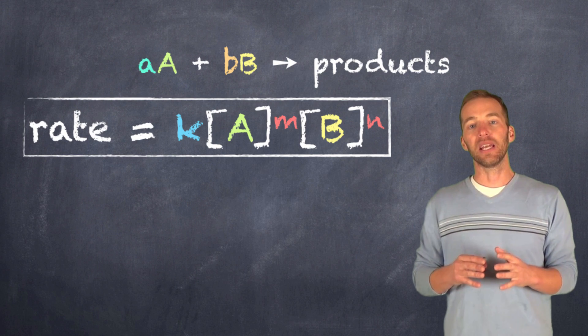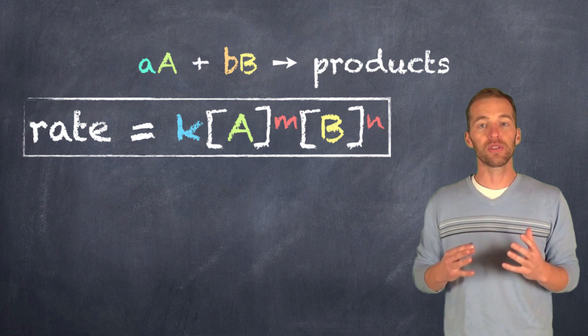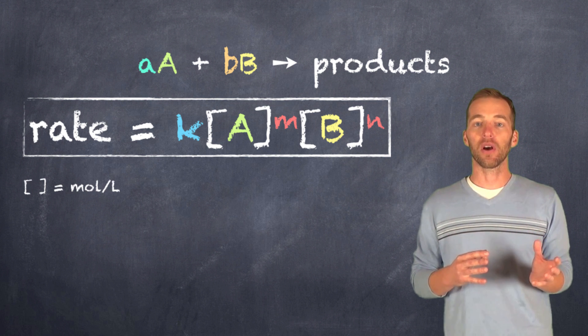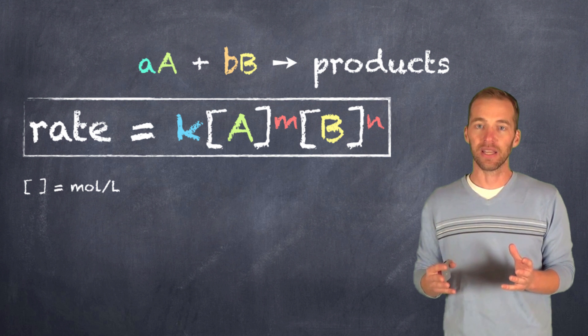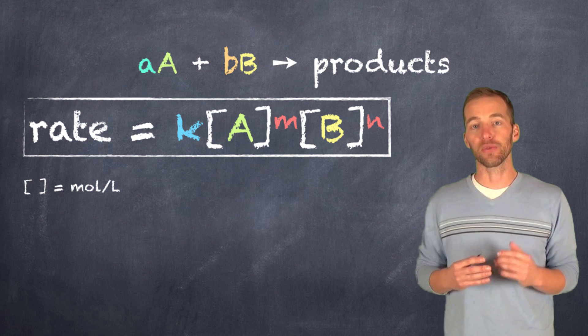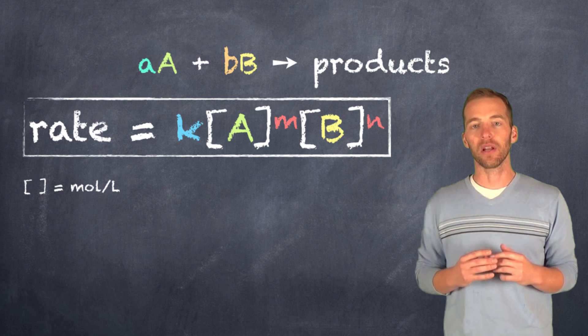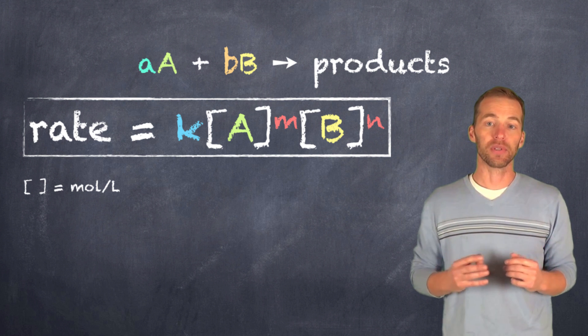If we look at the variables that we have in this rate law, we can see that the square brackets always denote moles per liter, and that we have the concentration of both of our reactants in there, A and B. Now, if there was a C and a D, those concentrations would also be considered in our rate law. So our rate law is as long as the number of reactants that we have in our particular reaction.